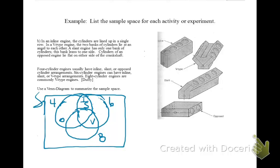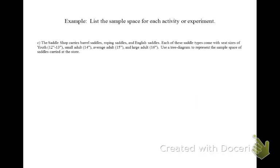This is a complete Venn diagram. The saddle shop carries barrel saddles, roping saddles, and English saddles. Each of these saddle types come with seat sizes of youth, small adult, average adult, and large adult. Use a tree diagram to represent the sample space of saddles carried at the store.